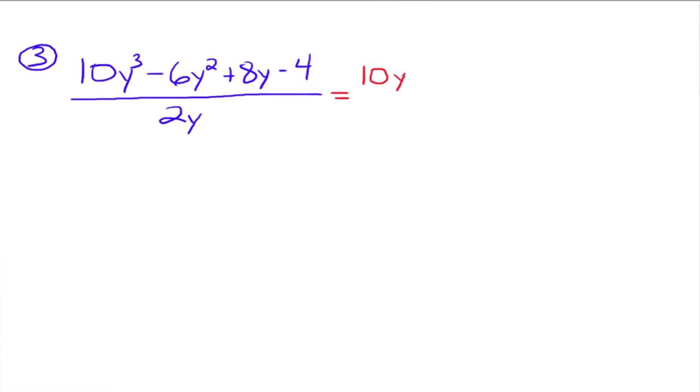So 10y cubed divided by 2y, minus 6y squared divided by 2y plus 8y divided by 2y minus 4 divided by 2y. So you just set up four individual fractions and reduce each of those things down.